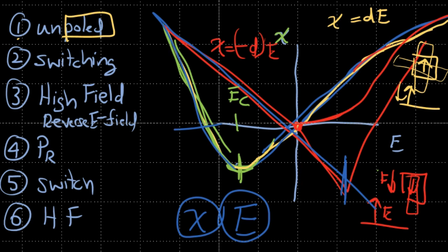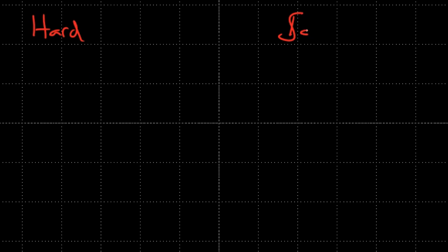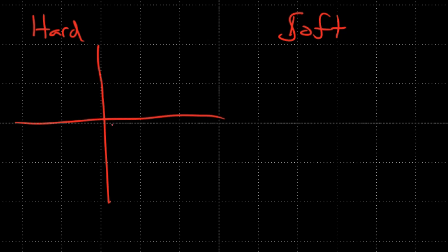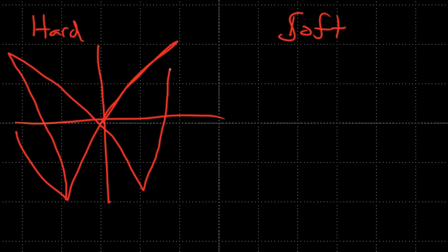These points on the curve denote the coercive field. Remnant polarization cannot be found on this strain-E curve. Now, a brief note on hard and soft PZT: hard PZT has a large coercive field, making it more stable under applied electric field. Its strain-E curves show sharper edges and larger coercive fields.